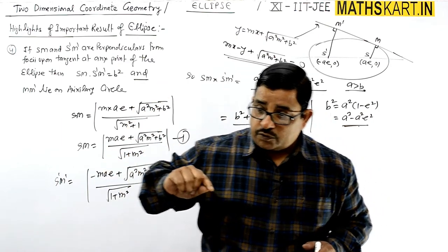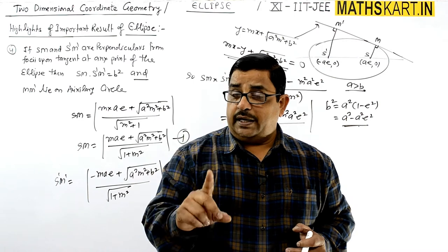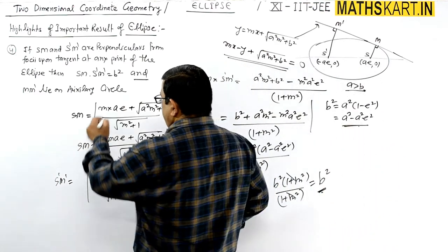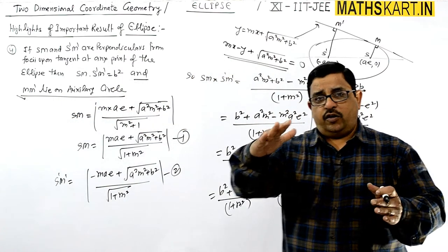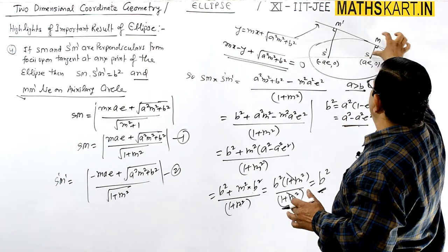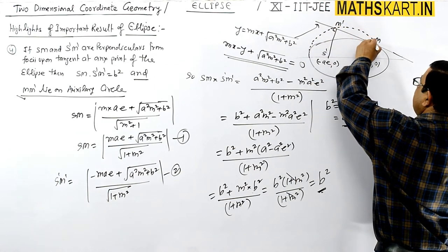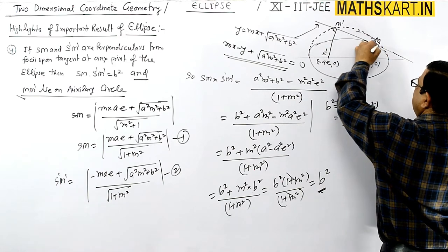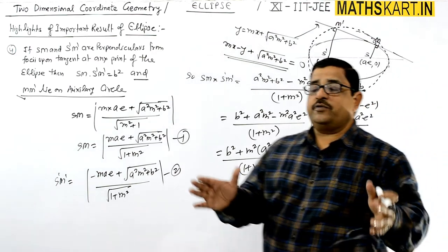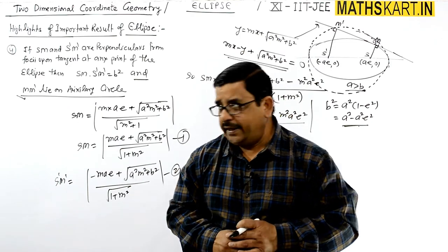So the product of perpendicular lengths from both foci to any tangent is always b². The second part of this property: the feet of the perpendiculars M and M' lie on the auxiliary circle. A numerical example on this has been done previously — all such points M and M' lie on the auxiliary circle.